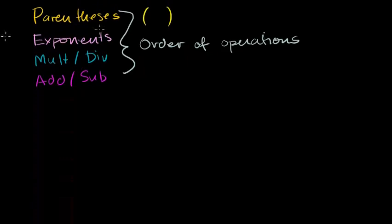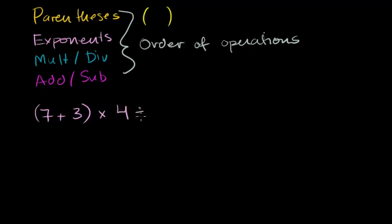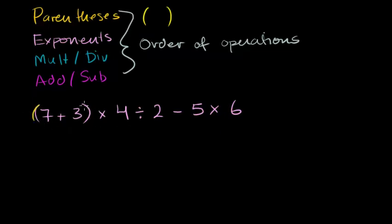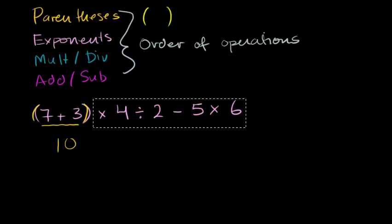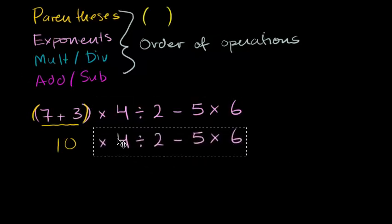Let's do another example. Let's say I have (7 plus 3) times 4 divided by 2 minus 5 times 6. There are all sorts of operations here, but if you just follow the order of operations you'll simplify it cleanly. First, look for parentheses — there are parentheses around the 7 plus 3. So we do that first: 7 plus 3 is 10. This simplifies to 10 times 4 divided by 2 minus 5 times 6.